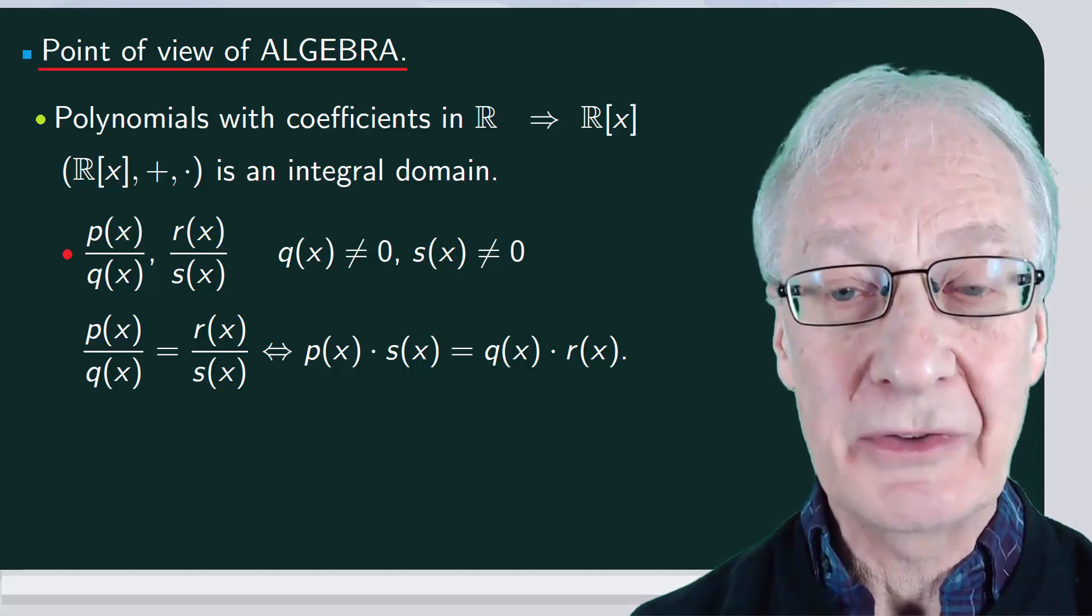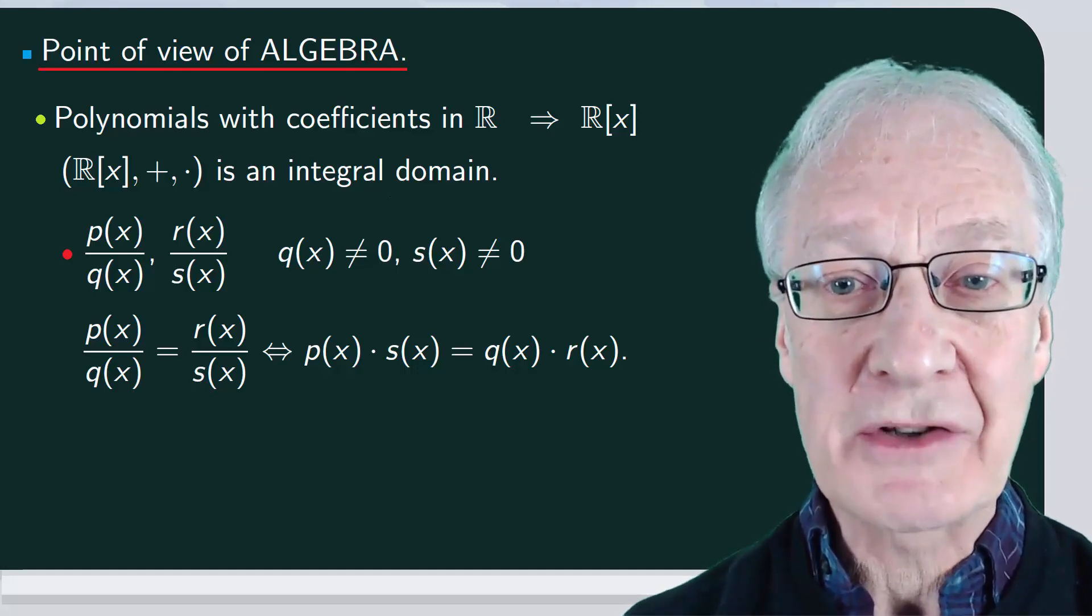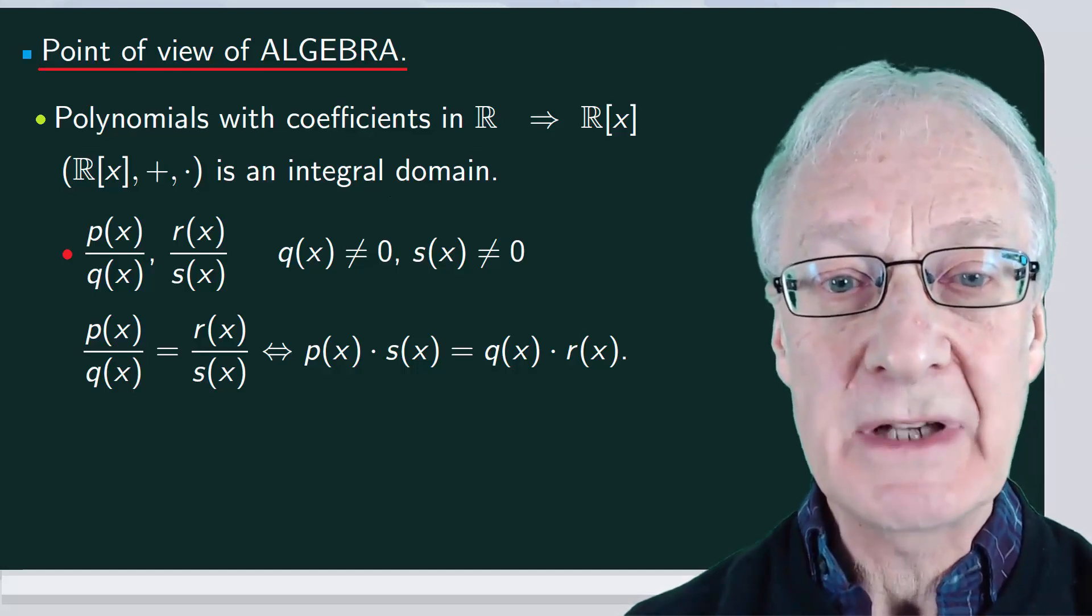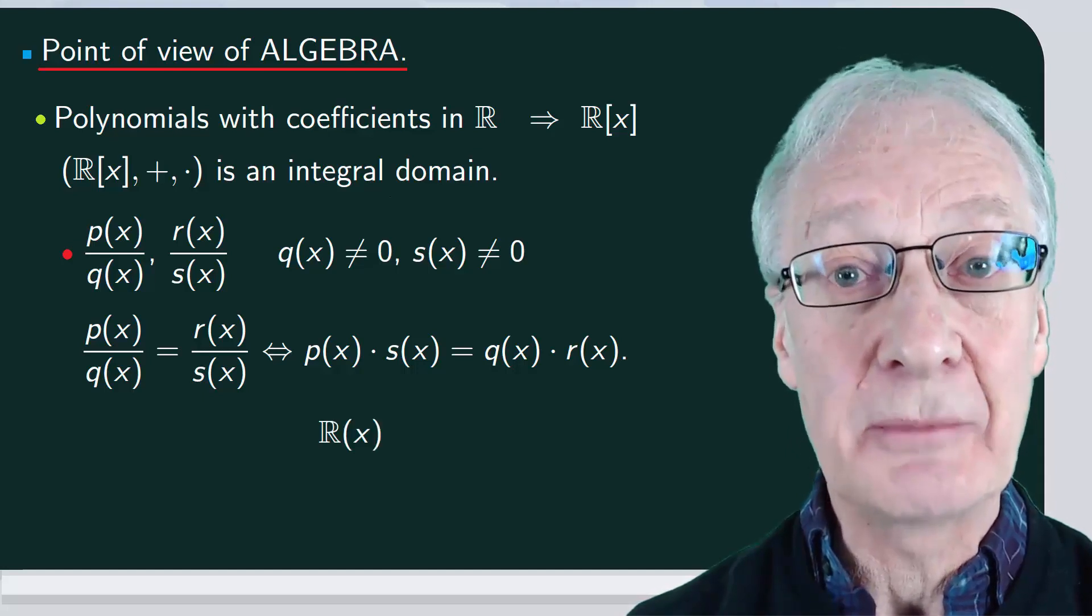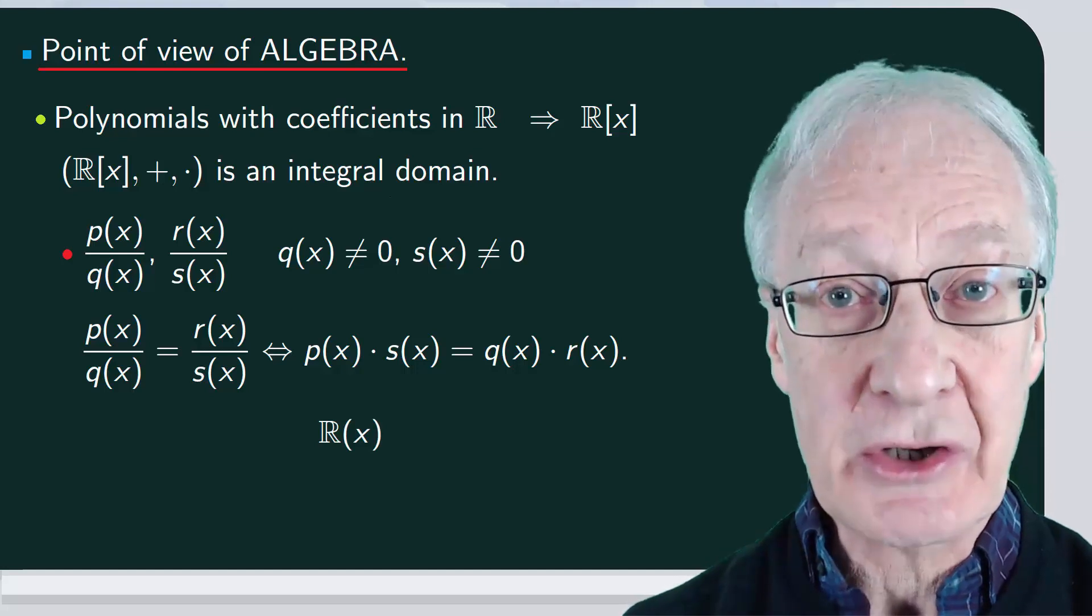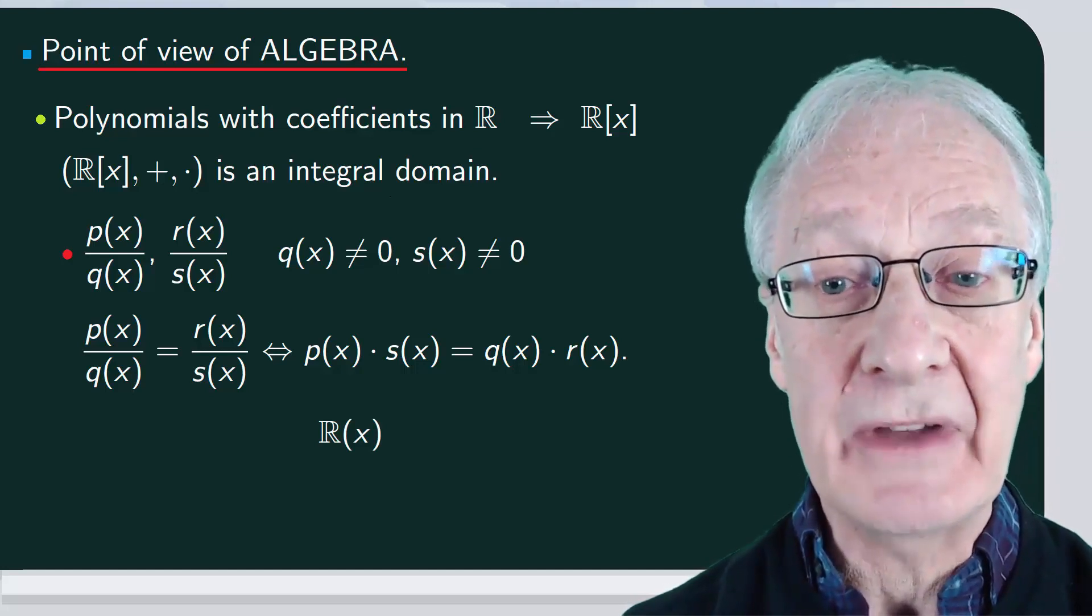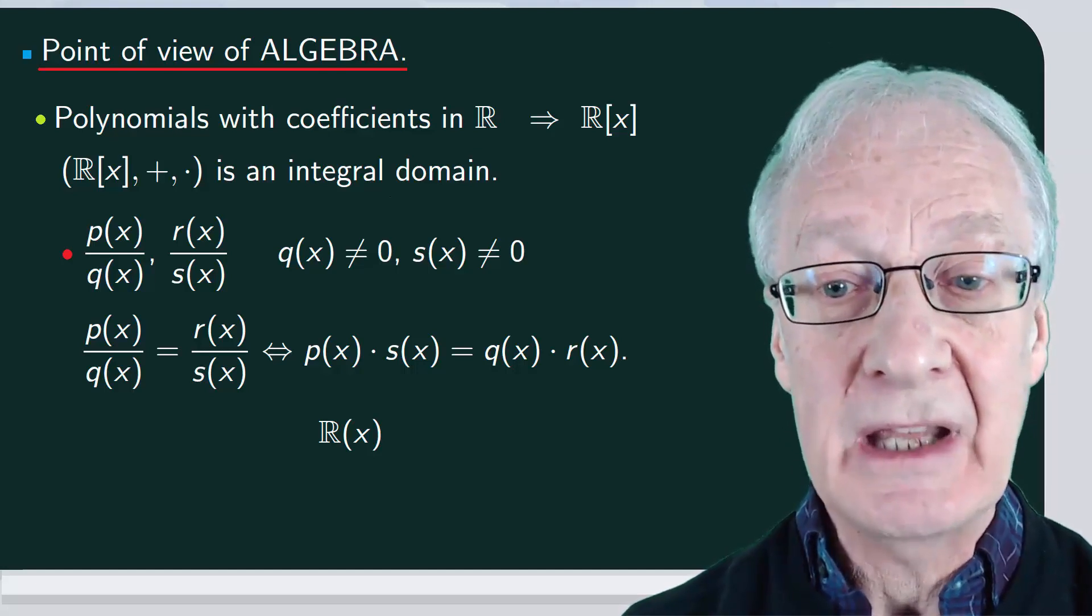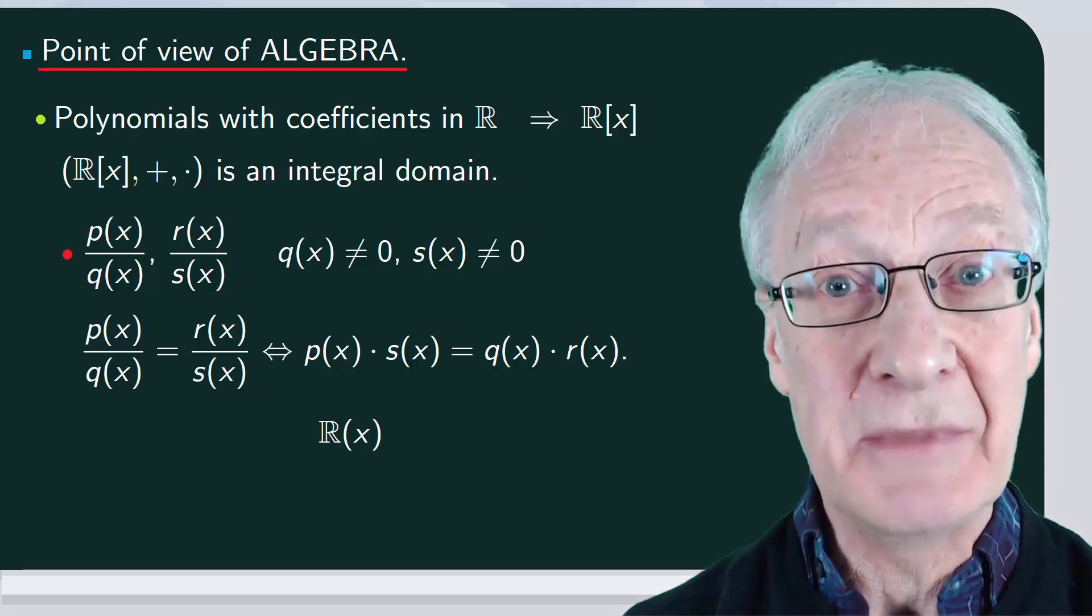This is a binary equivalence relation, and if we consider all the fractions equivalent to each other as the same, we obtain the field of algebraic fractions, denoted by r followed by x in parentheses. This construction, which is done in the same way for fractions of integers and for fractions of polynomials, is called the field of quotients of an integral domain.